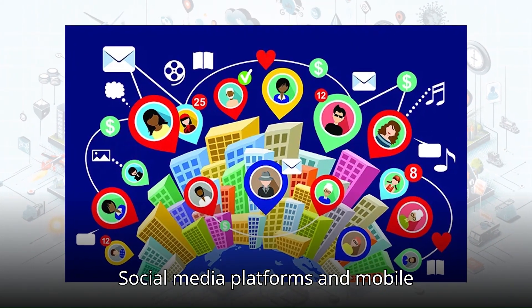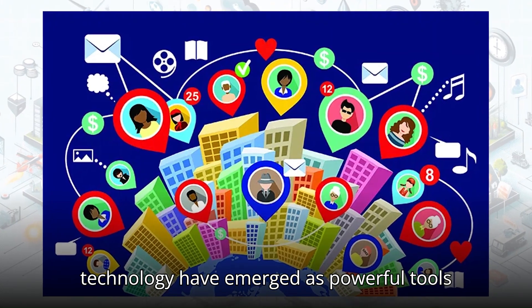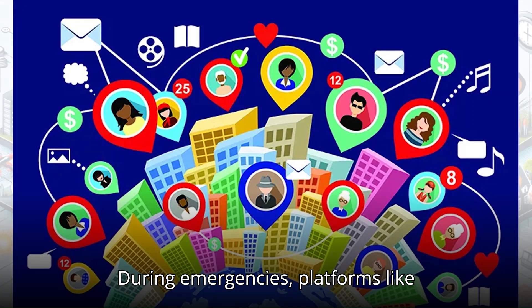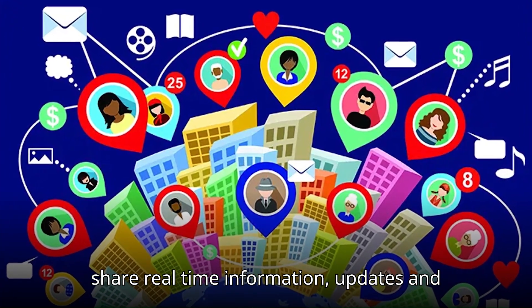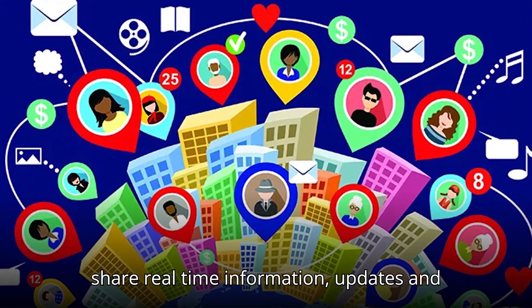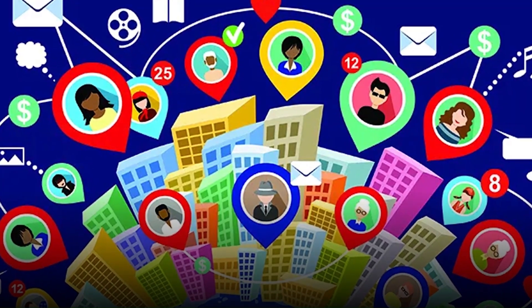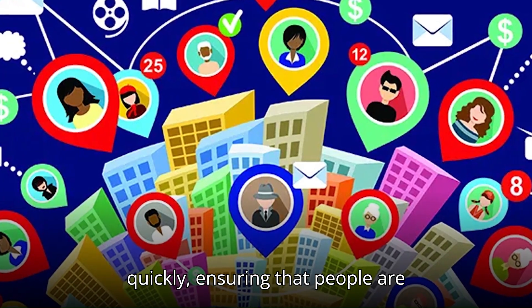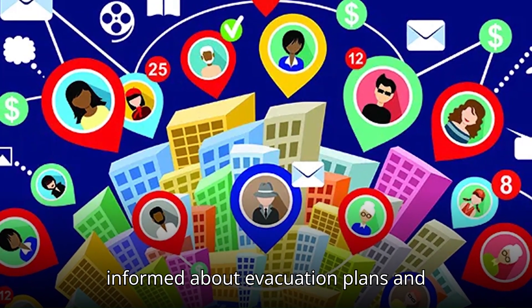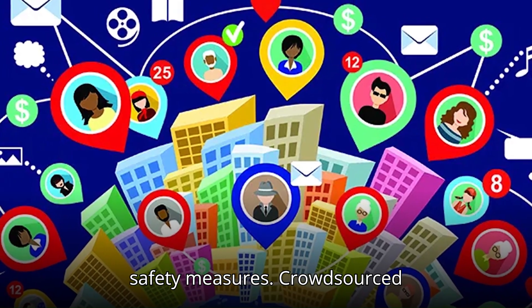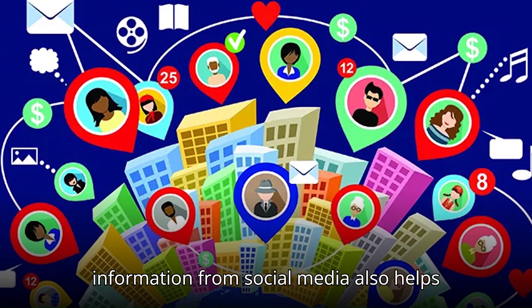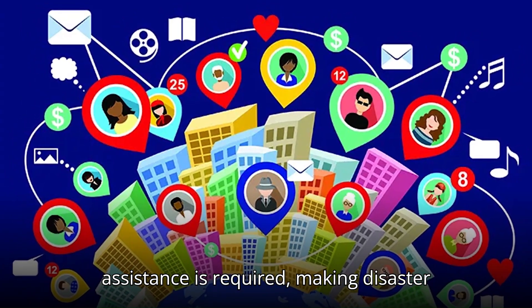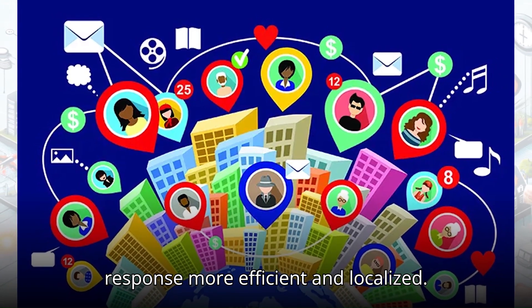Social media platforms and mobile technology have emerged as powerful tools for disaster communication. During emergencies, platforms like Twitter and Facebook are often used to share real-time information, updates and safety instructions. Mobile apps and SMS alerts allow authorities to reach large populations quickly, ensuring that people are informed about evacuation plans and safety measures. Crowdsourced information from social media also helps in identifying areas where immediate assistance is required, making disaster response more efficient and localized.